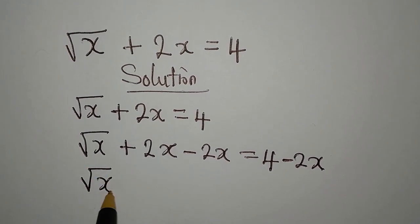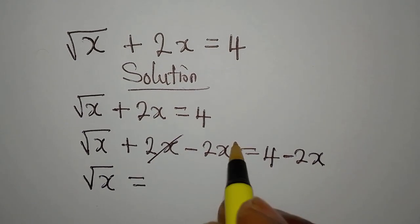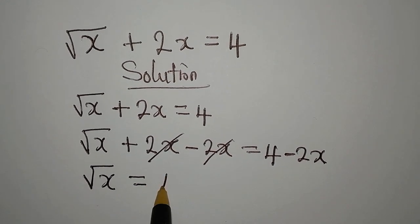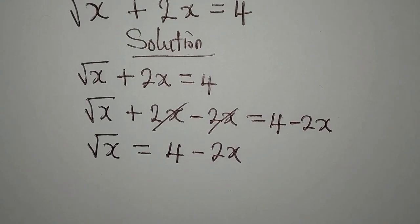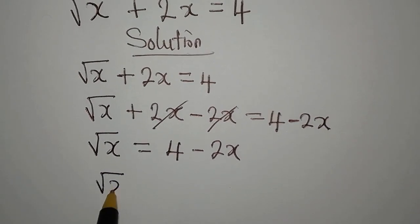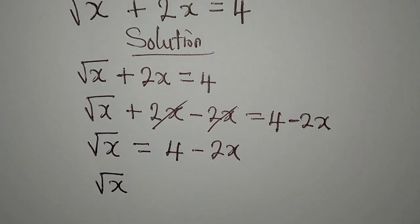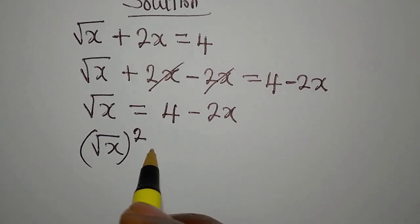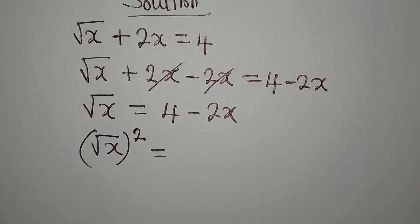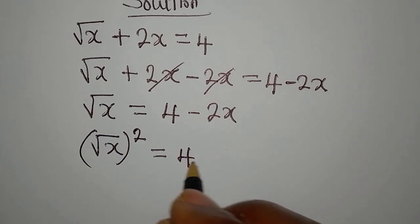Square root of x is what we have on the left side now, because these cancel out, and then we have 4 minus 2x. Now how do we proceed from here? Our target is to remove the square root, and we can do that by squaring it.